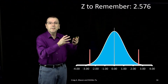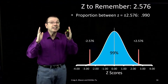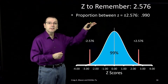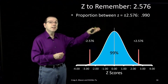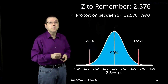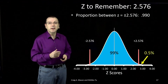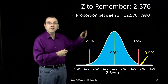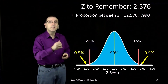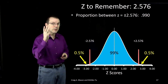The third is a z of 2.576, and that's the z-score that bounds 99% of the area under the normal curve. The area between a z of positive 2.576 and a z of negative 2.576 is 0.99. The remaining 1% is evenly split, with 0.5% above a z of 2.576 and 0.5% below a z of negative 2.576.